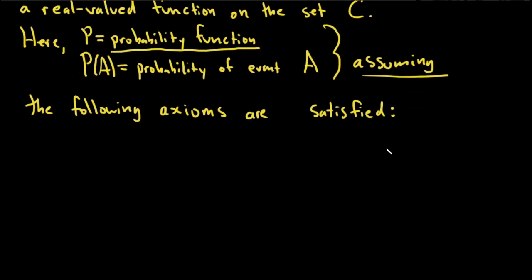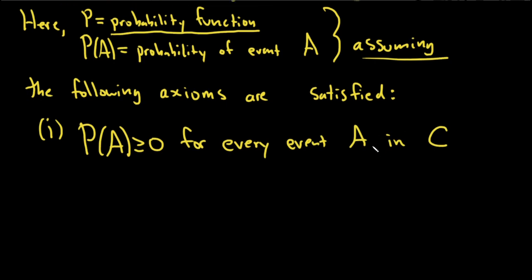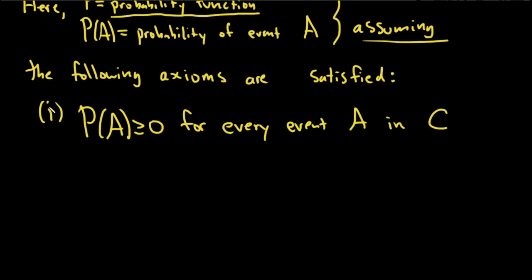So the first one is that P of A is greater than or equal to zero for every event A in C. So it's non-negative always. That's we're going to call that axiom one.